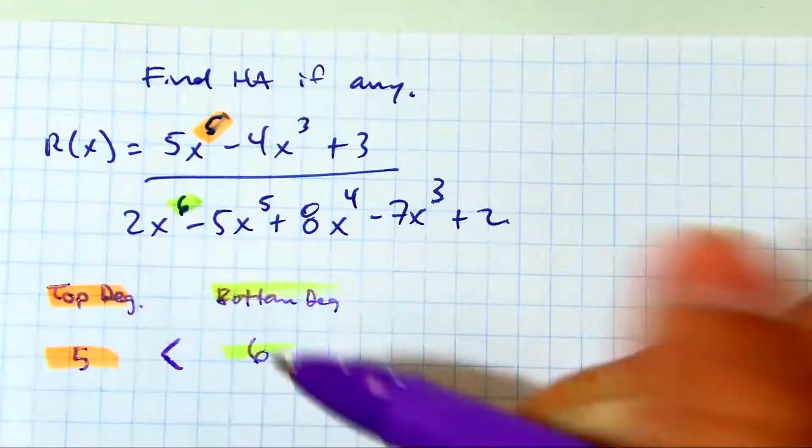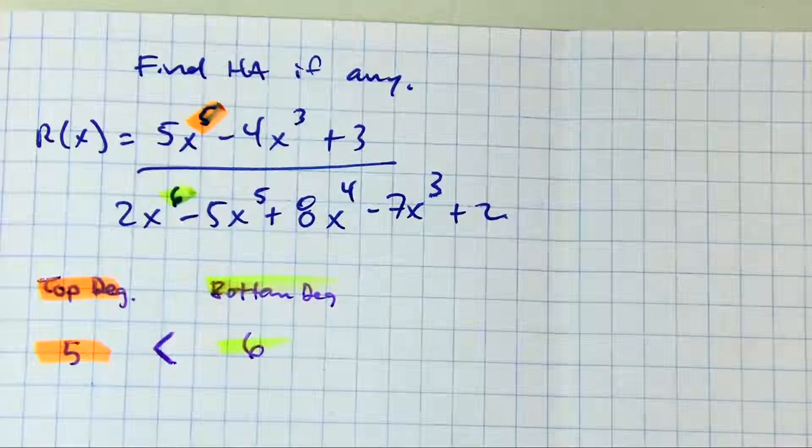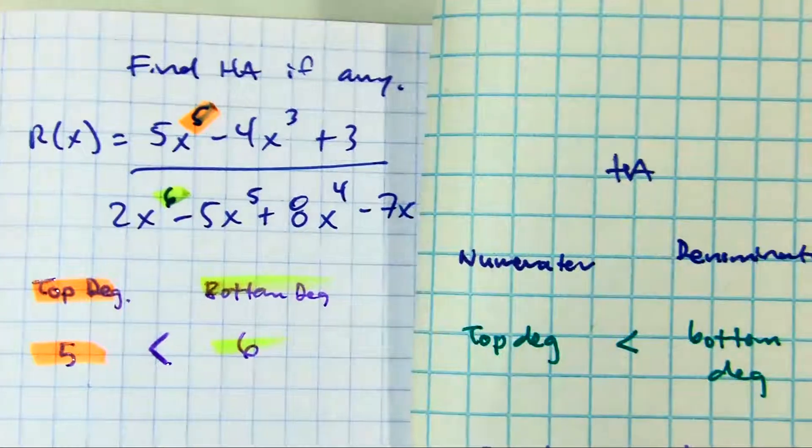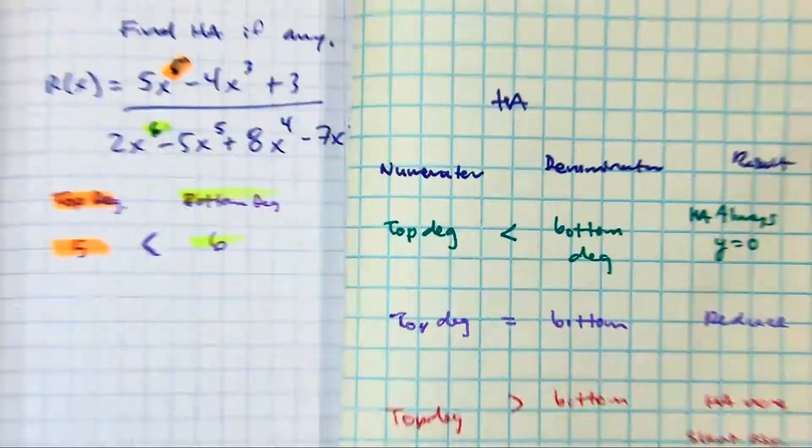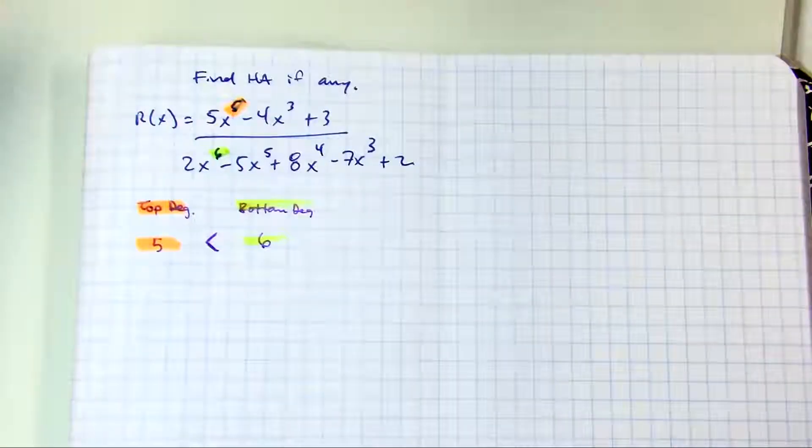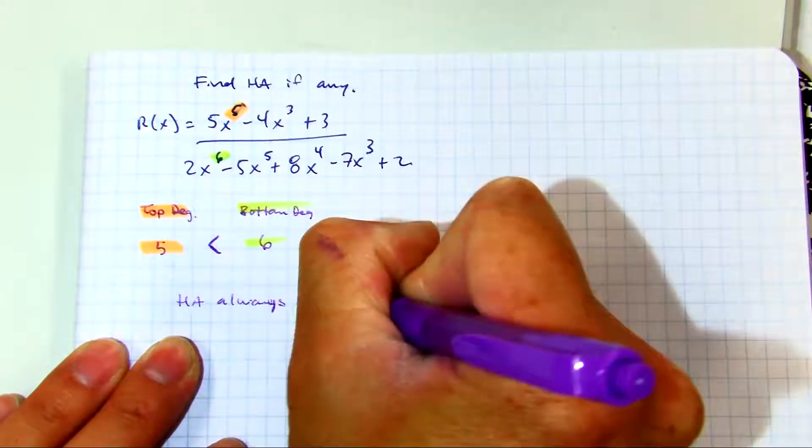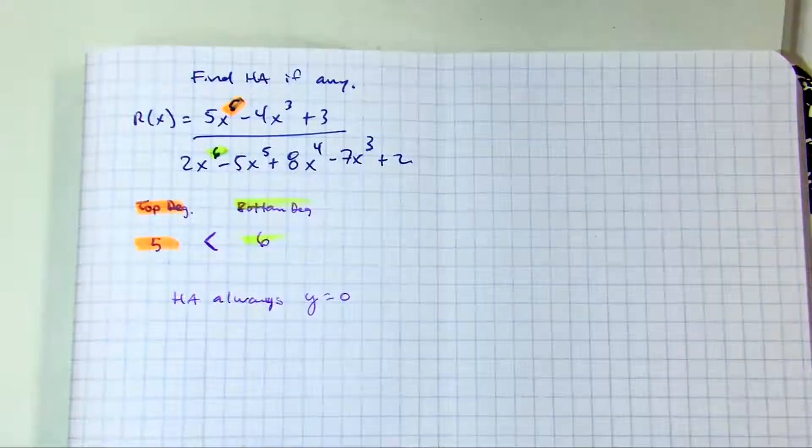And if you looked at your chart, then your result is... So here's mine. It's less than, so the horizontal asymptote is always, always y equals 0. So y equals 0 is your answer.